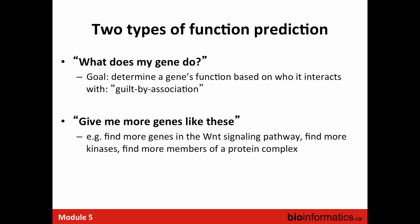The second type of prediction is: give me more genes like these. If you're setting up a screen for genes in the Wnt signaling pathway, you want a list of all known Wnt pathway genes and to ask what other genes are functionally associated with them. This is a different type of question because when you provide a list of genes, you can determine which networks are relevant — the networks that link those genes together are probably the important ones for understanding what connects the list.